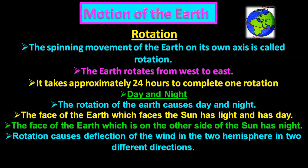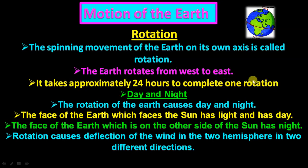When writing about the rotation of the earth, note the direction: west to east. The earth rotates from west to east and takes approximately 24 hours to complete one rotation — starting from a point and returning to that same place.